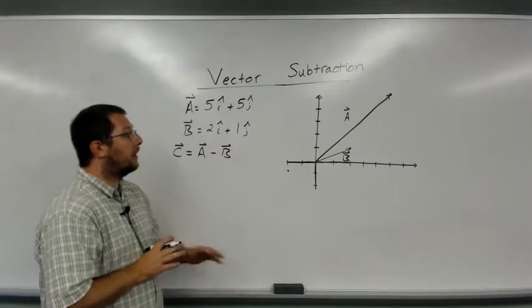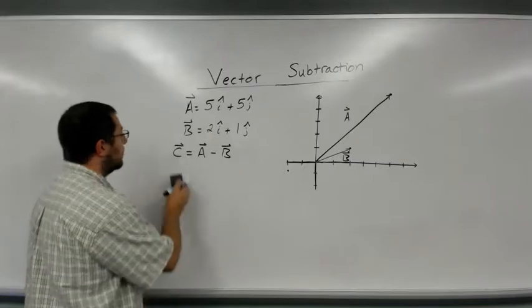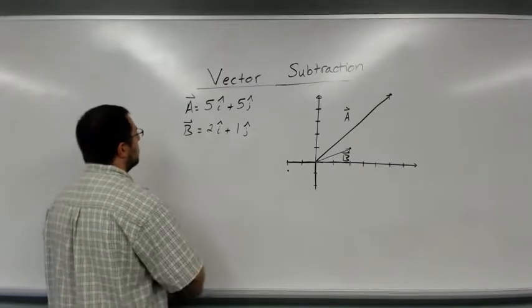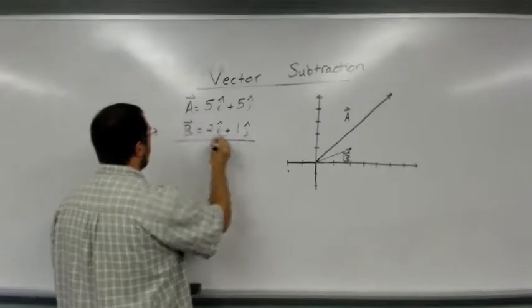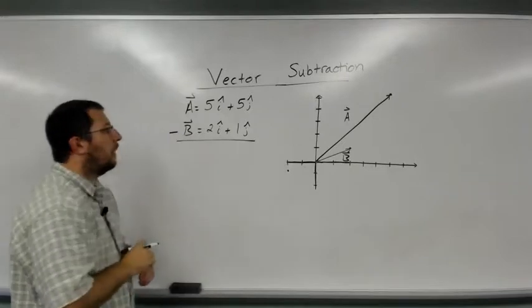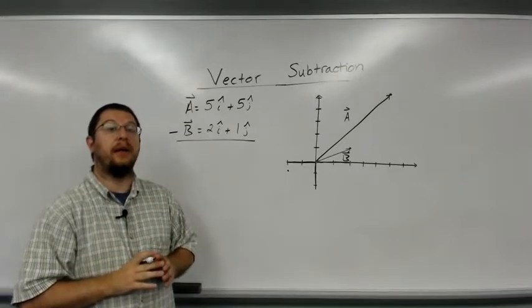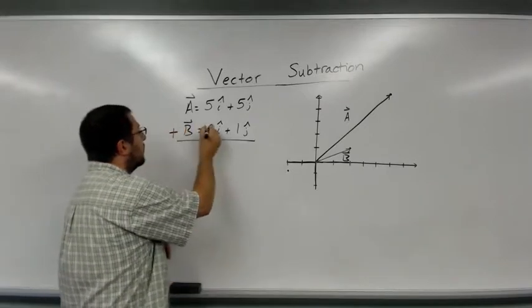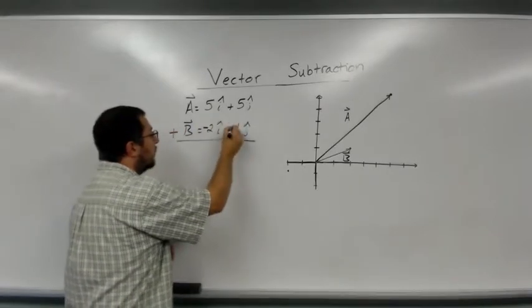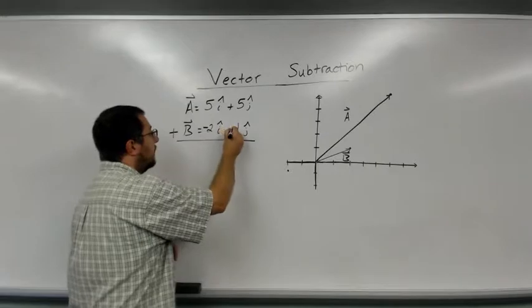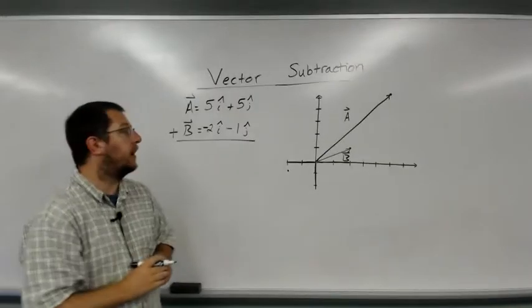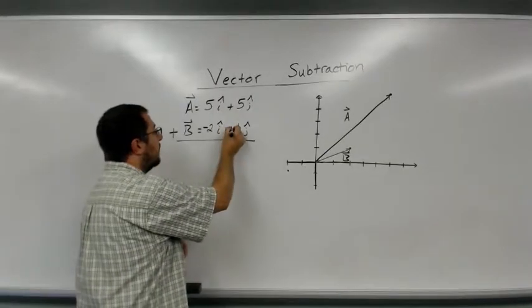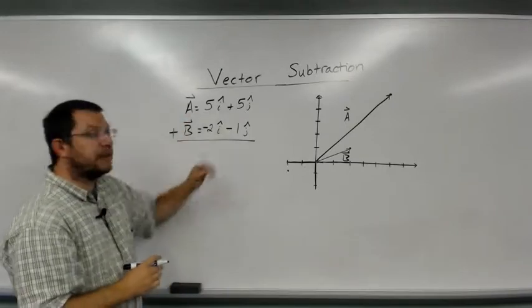Now graphically, well let's start with the components. The components act just like addition. What I'm going to do is I'm going to take a plus sign here but I'm going to multiply through b, the quantity that's being subtracted, by a negative sign. I'm going to multiply through b with a negative sign and then I'm going to add them like I did before.